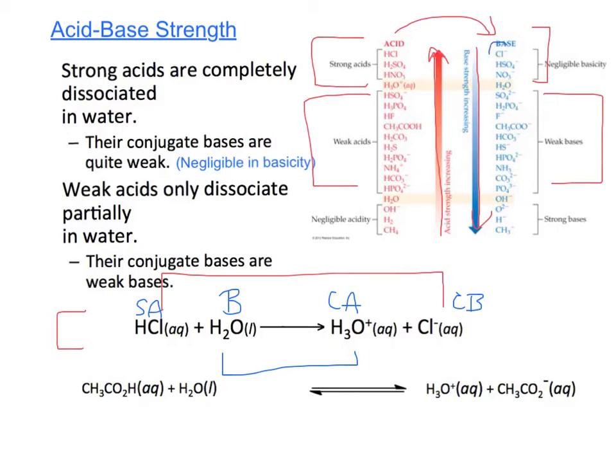So I would look over here to see that Cl minus is right there - it's a conjugate base, it's negligible. HCl is right here, so the conjugate base of my strong acid HCl is not very strong; the conjugate base is really weak, it's negligible.